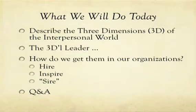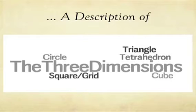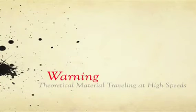First, a description of the three dimensions. I'm going to use different shapes — the first of which will be a grid. But first, a warning: you can expect some theoretical material traveling at high speeds. I want to show you this is not a fanciful idea I made up, but is grounded squarely and soundly in very established psychological principles and supported by research.